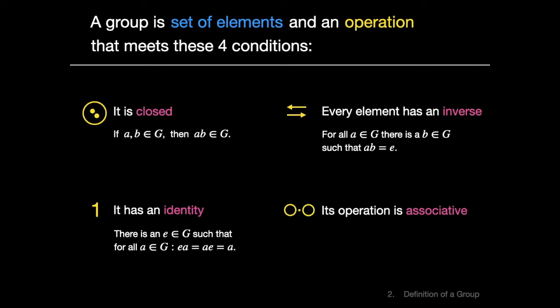Let's add associativity to the list as our fourth and final requirement. To put this formally, we say, for all elements A, B, and C in group G, the product of AB times C equals A times the product of B and C.